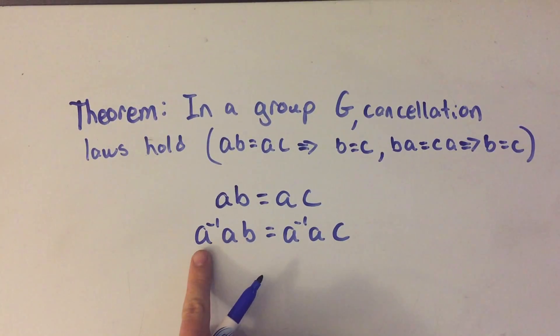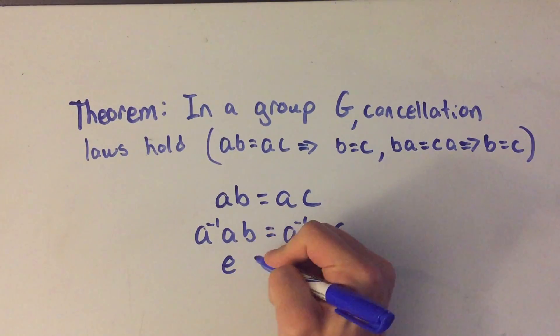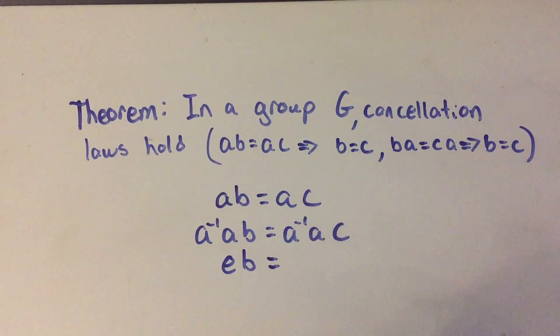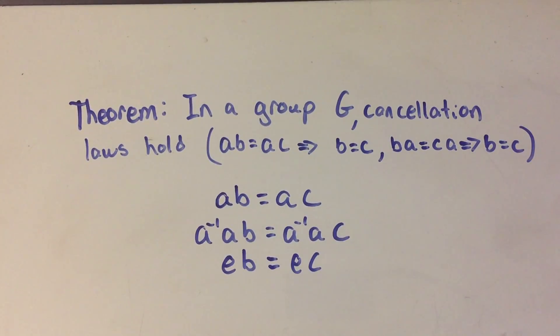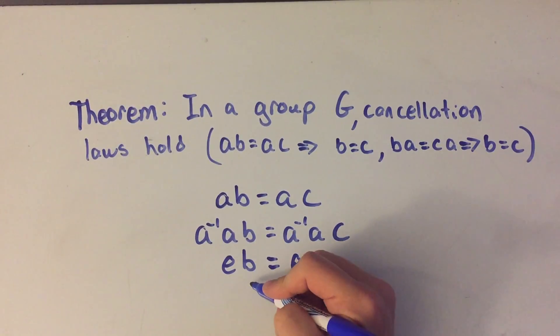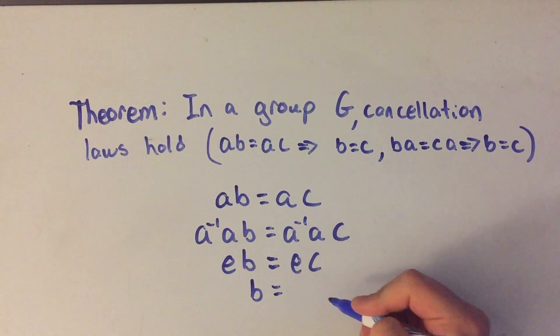But what happens here is I've got a times a inverse and we know by definition a a inverse is equal to e, the identity and the identity elements. And same thing on the left. So I've got the identity b is equal to the identity times c and the identity element times an element is just the element itself. So we get that b equals c.